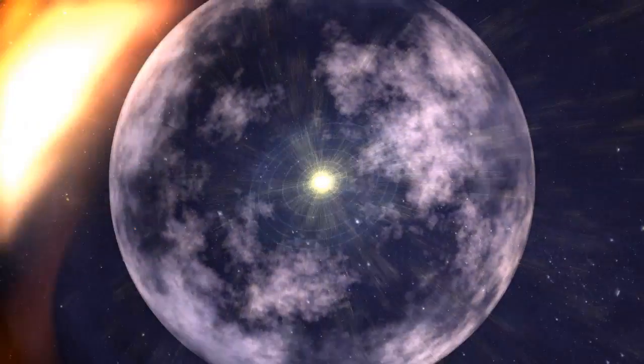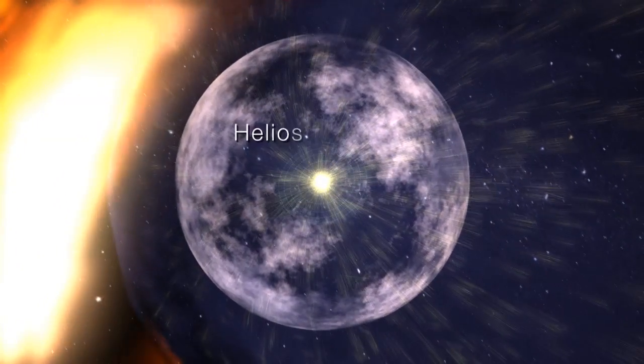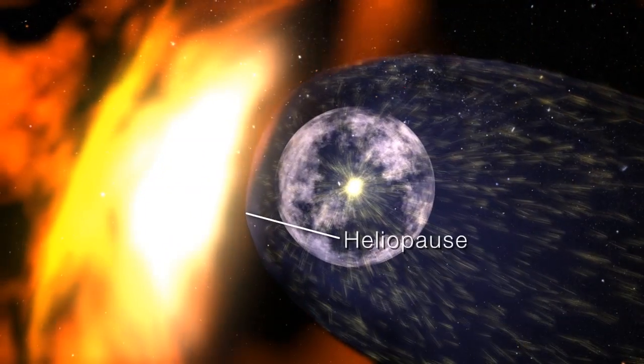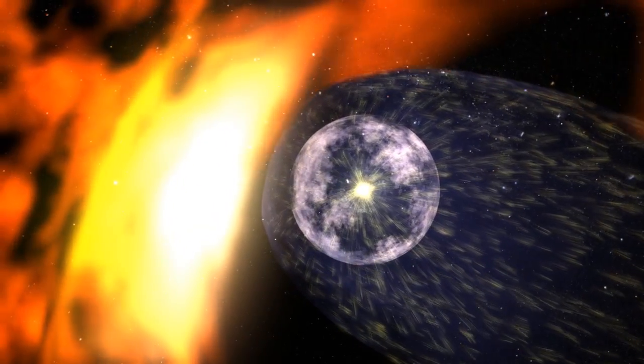The solar wind pushes out against this galactic wind, forming a bubble called the heliosphere. The outer boundary is called the heliopause and is blown into a teardrop shape by the galactic wind.